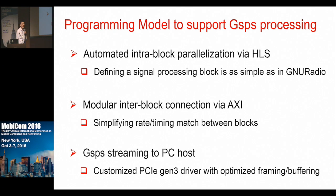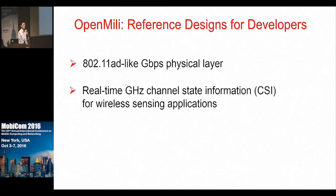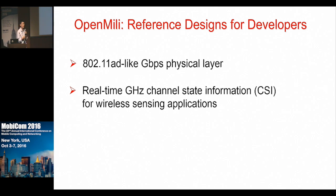We also designed the customized PCIe Generation 3 interface between the PC host and FPGA with 48 Gbps of digital throughput, so we can stream digital samples to PC host memory, process everything there, and log channel traces in real time with gigahertz resolution. We defined two reference designs in our software framework: the first is a gigahertz communication protocol roughly following the 802.11ad standard with Gbps communication speed using OFDM-based modulation; the second is a gigahertz channel sensing reference design allowing us to obtain channel state information in real time with one gigahertz of bandwidth.